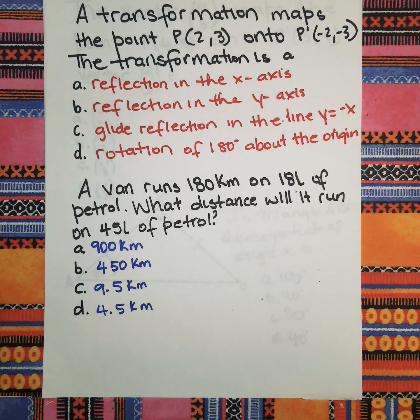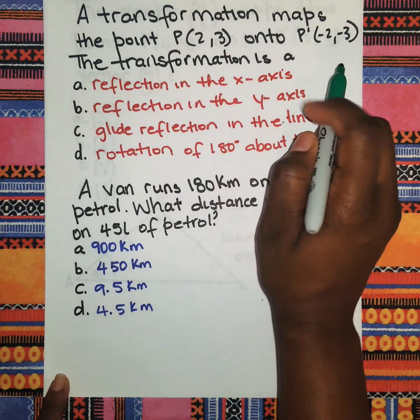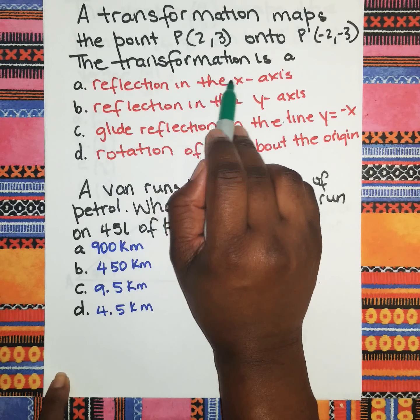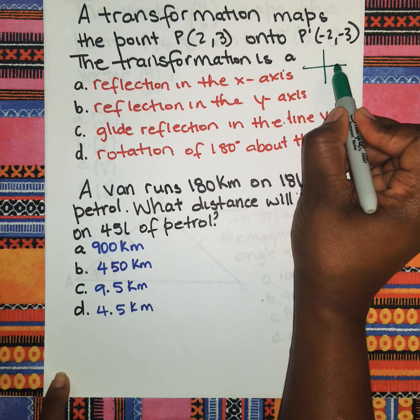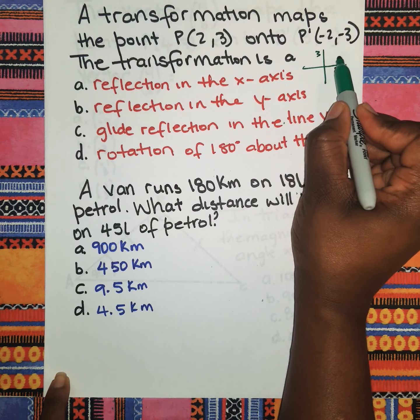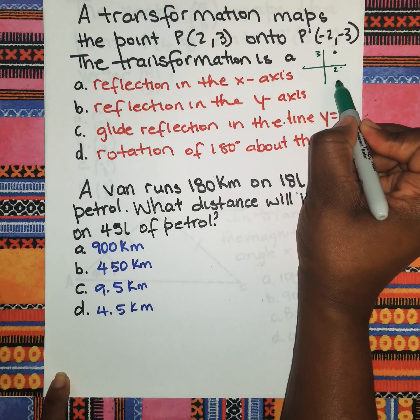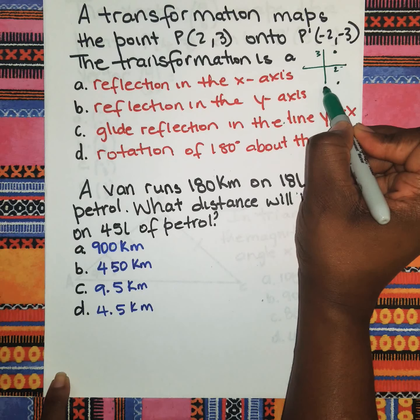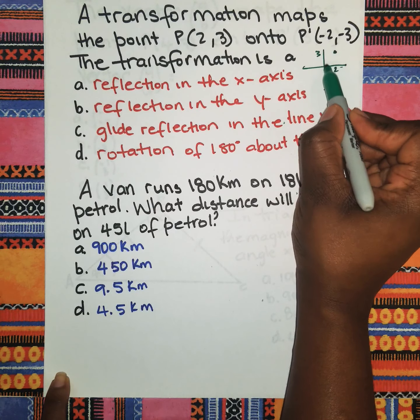The transformation maps the point P(2,3) onto P'(-2,-3). The transformation is: Is it a reflection in the x-axis? If I should draw my small Cartesian here with 2 and 3, if you reflect it in the x-axis it will be coming down here where the 2 will still be positive and the 3 will be negative, so we know that's not the answer.